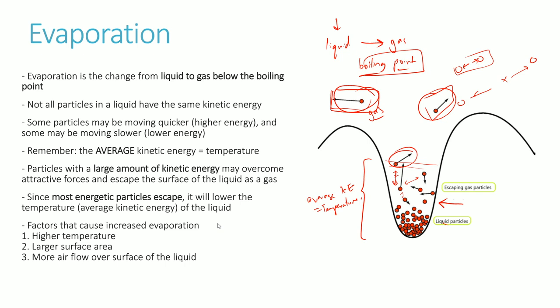Since the ones that escape are the most energetic particles, and temperature is the average kinetic energy of all particles in the substance, when the highest-energy particles leave via evaporation, the average kinetic energy of the remaining particles goes down. By definition, this means the temperature of the substance decreases. That's exactly why humans sweat — the sweat evaporates, and as it does, it cools the skin down.